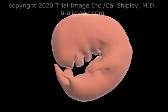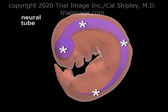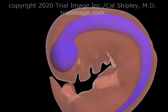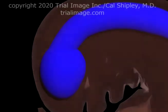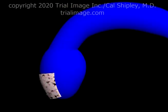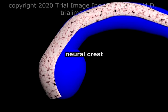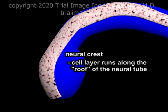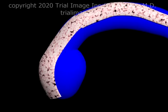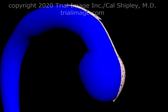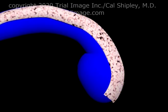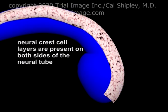Now let's turn to the process by which the branchial arches develop into the craniofacial structures previously mentioned. Stretching across the top or roof of the neural tube is a layer of cells known as the neural crest, present on both the left and right sides of the neural tube.